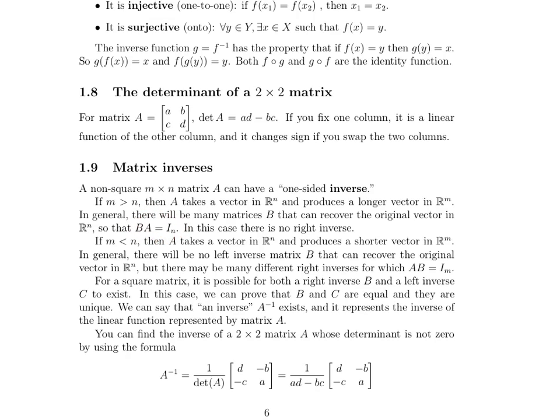Remember, if we're multiplying by vectors, the vector is going to be on the right, and so it encounters A first and then B second — that's how order works. There will be a ton of left inverses. There will be no right inverse.